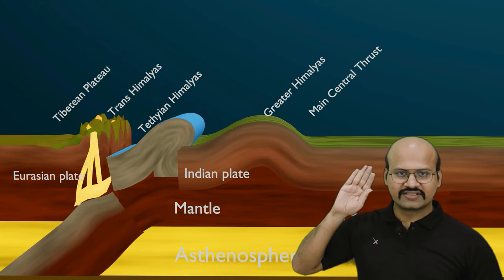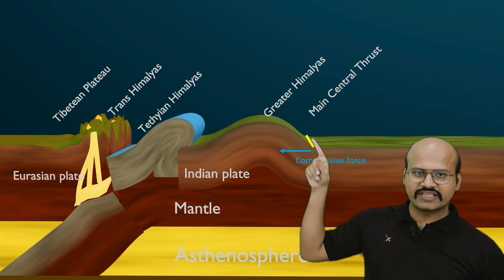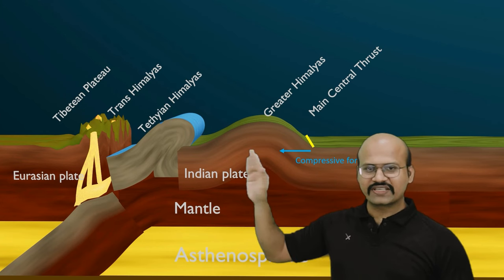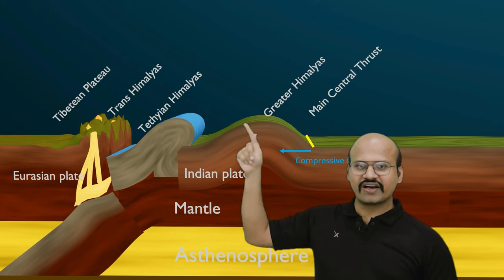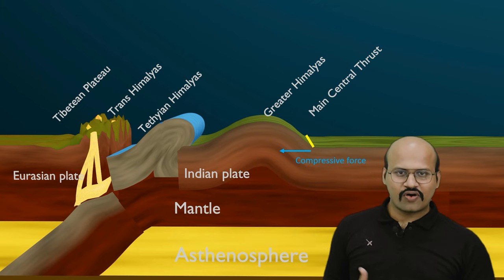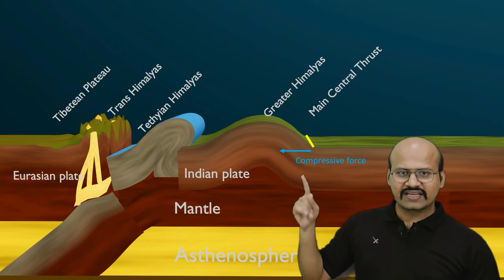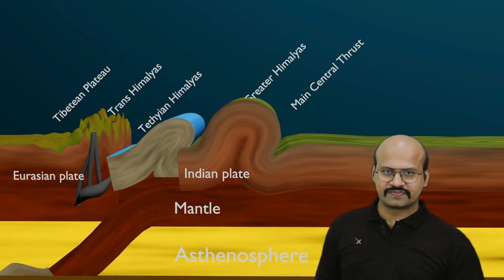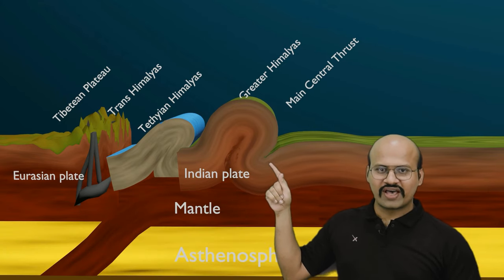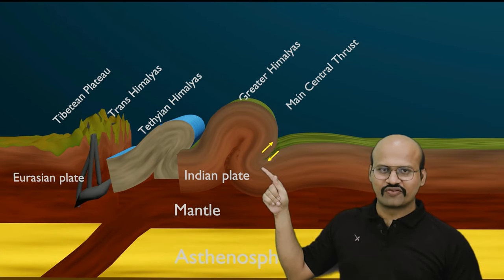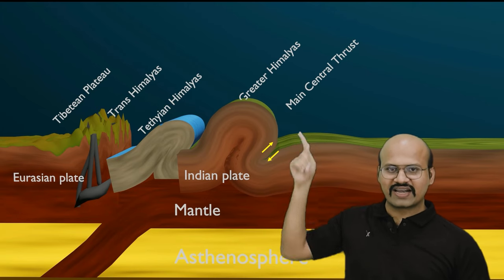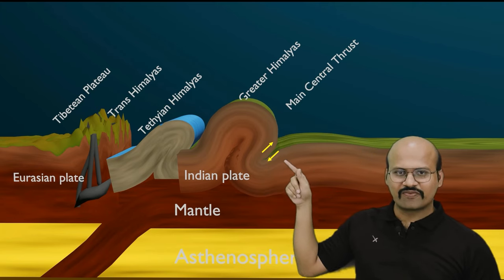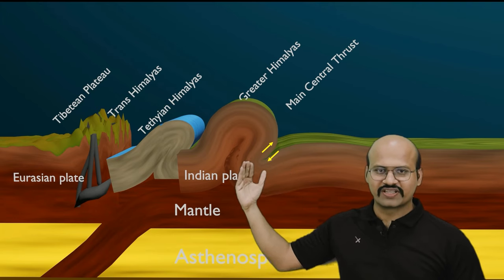Once the oceanic mantle has completely subducted, the continental crust and continental mantle begin to subduct. Because of this subduction process, a compressive force acts along this boundary, trying to compress the whole region. Therefore folding starts in this region. As the force continues, this part of the plate starts to subduct while another part is uplifted. The region where this compressive force acted and created the fold is called the Main Central Thrust, and it lies just after the Greater Himalayas.